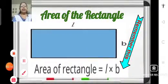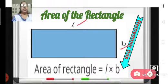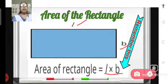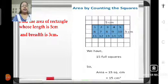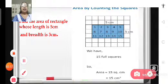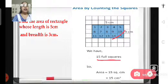If we have a rectangle with length l and breadth b, then we can find the area of the rectangle. That means if we multiply the value of the length by the value of its breadth, we get the area of the rectangle. Let us consider this example: find the area of a rectangle whose length is 5 centimeters and breadth is 3 centimeters. If we find the area by counting the squares enclosed by this rectangle, we can see that we have 15 full squares. So the area of the rectangle is 15 square centimeters.